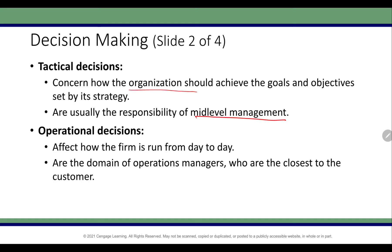The operational decision level deals with how to run the firm day to day. These are done by operations managers — store managers, people at the city or region level. These are concerned with much smaller details. The big picture is set forth by the strategic level, and all the decisions done at the operational level are really trying to achieve that goal set forth by the strategic decision makers.